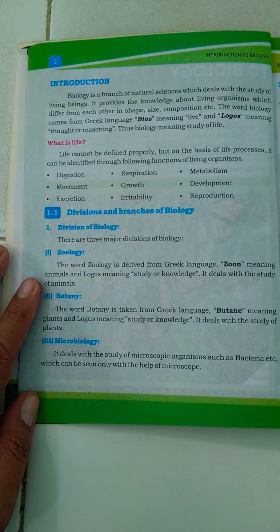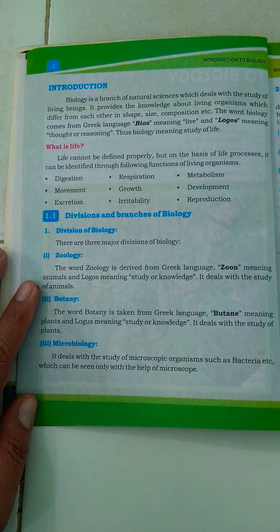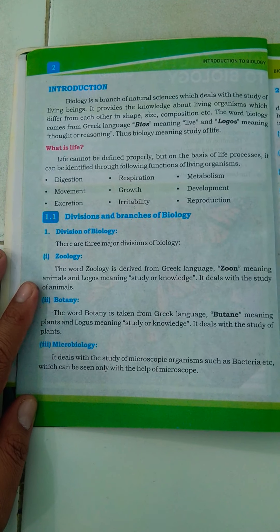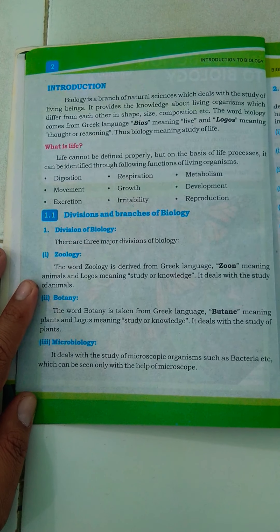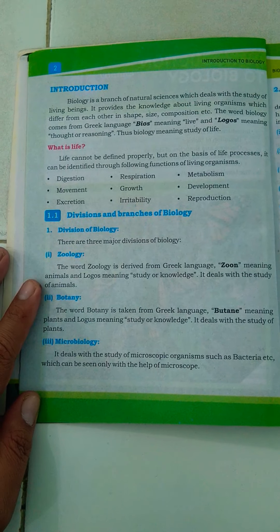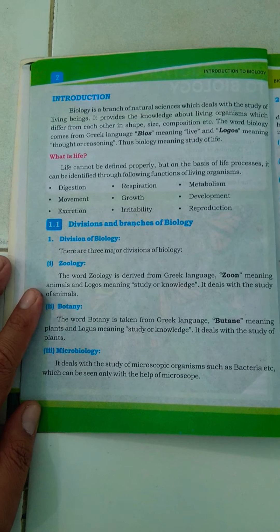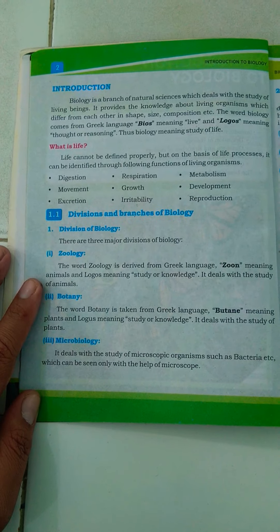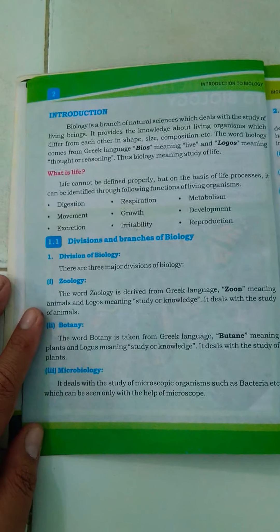Movement is the process by which living organisms move from one place to another or move their body while staying in place. Growth allows them to grow from smaller to larger, in length or in width. Development also takes place in living organisms, along with excretion, irritability, and reproduction — all processes which occur only in living organisms.